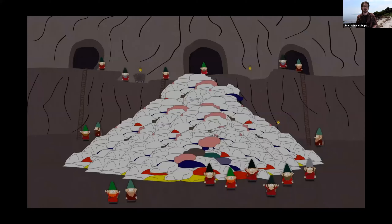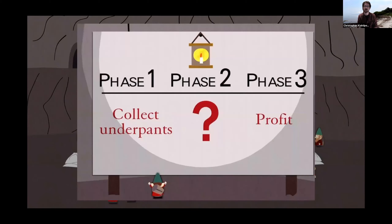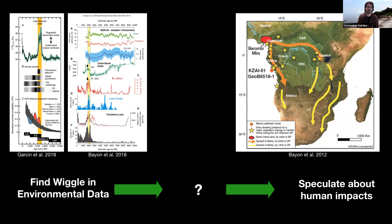I argue this logic is what I call 'underpants gnomes logic,' from the satirical TV show South Park. The underpants gnomes say: phase one, collect underpants; phase two, ???; phase three, profit. Our simple models for how people and the environment interact have a similar tendency. We find some wiggle in environmental data, say there's a change at some point in time, then speculate about human impacts — saying 'it gets drier' without thinking through the specifics of how that environment responds or the adaptive characteristics of extremely flexible people.